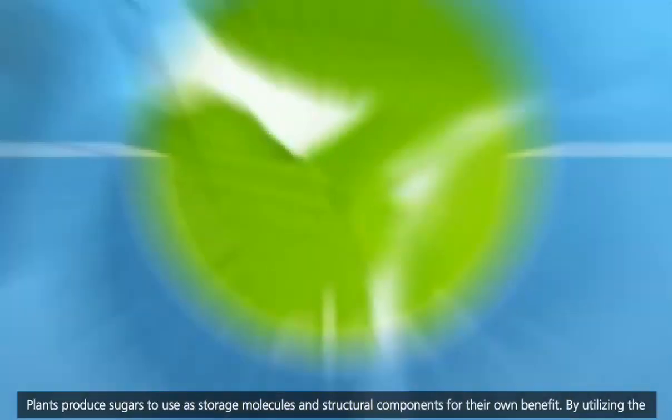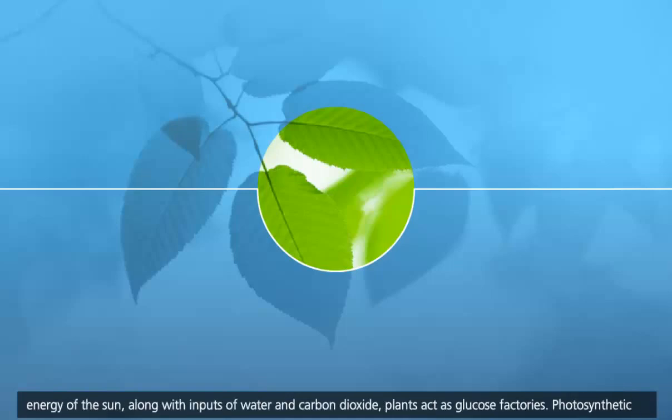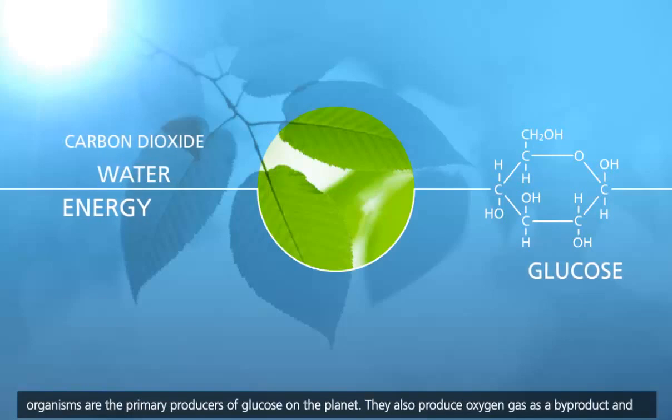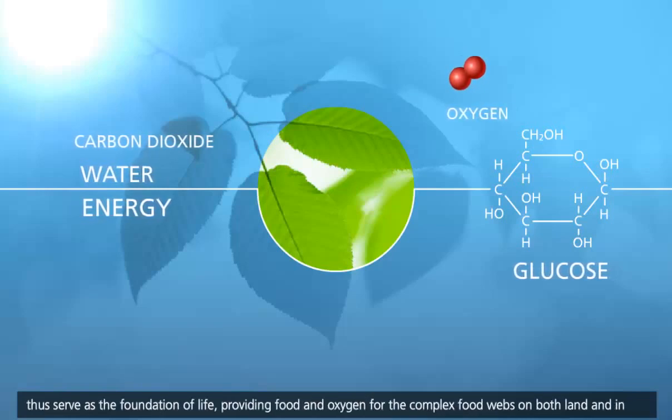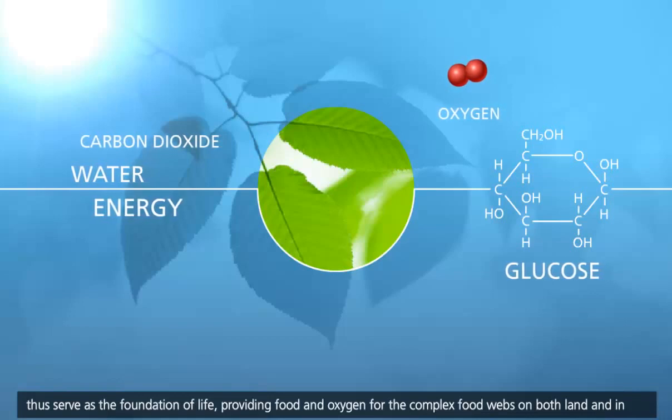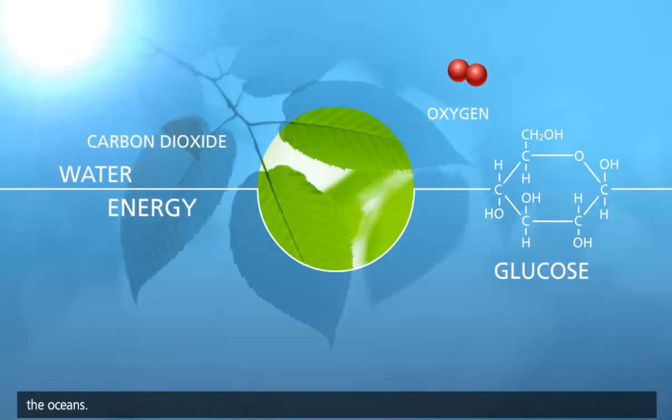Plants produce sugars to use as storage molecules and structural components for their own benefit. By utilizing the energy of the sun, along with inputs of water and carbon dioxide, plants act as glucose factories. Photosynthetic organisms are the primary producers of glucose on the planet. They also produce oxygen gas as a byproduct, and thus serve as the foundation of life, providing food and oxygen for the complex food webs on both land and in the oceans.